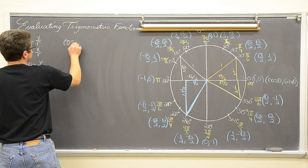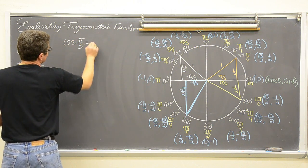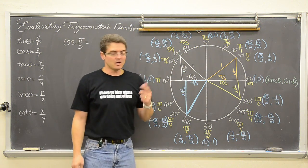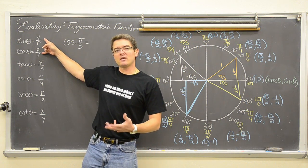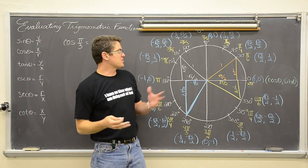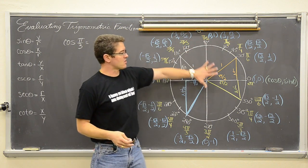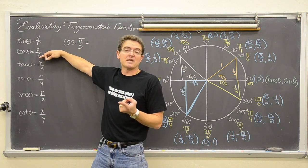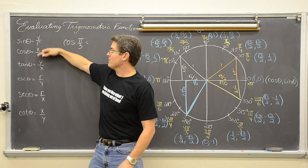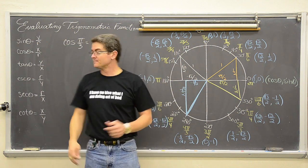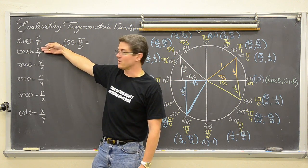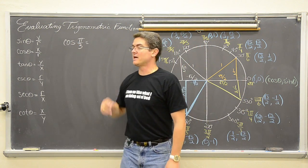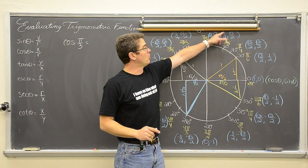Let's say that we have the cosine of pi over 3. You will have to remember that pi over 3 is 60 degrees. These trig functions work out to be the same regardless of the size of the circle, but I have set up a unit circle. When you set up a unit circle your r value is always 1 — that is the definition of a unit circle. So cosine is just the x coordinate and sine is just the y. The cosine of pi over 3, or 60 degrees, is just the x coordinate: one half.